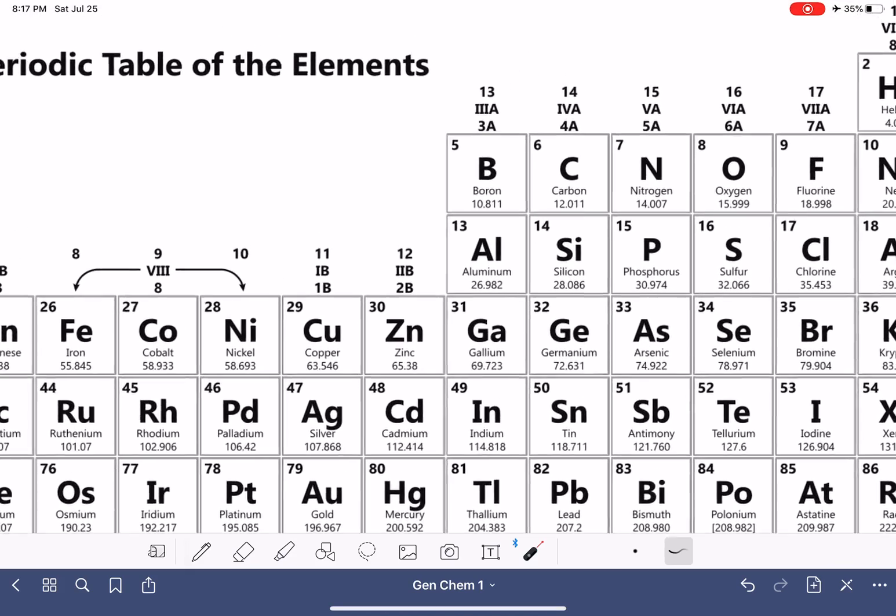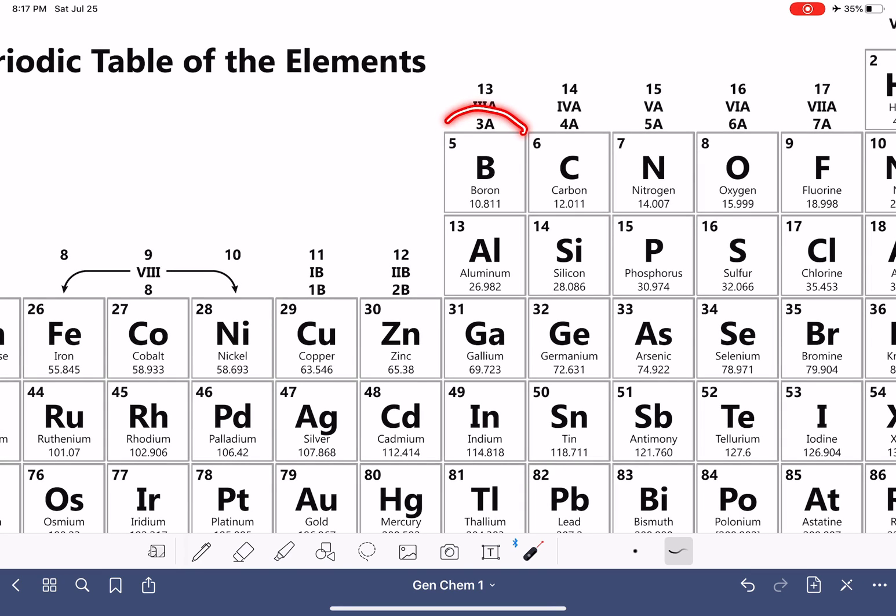Let's zoom in and let's focus on boron right here. We already know that this is the atomic number of boron. That's the number of protons in its nucleus. And then we also know right here that this is the average mass of a boron atom based on its isotopic abundance, which I talked about in a previous video. The average mass in units of AMU.